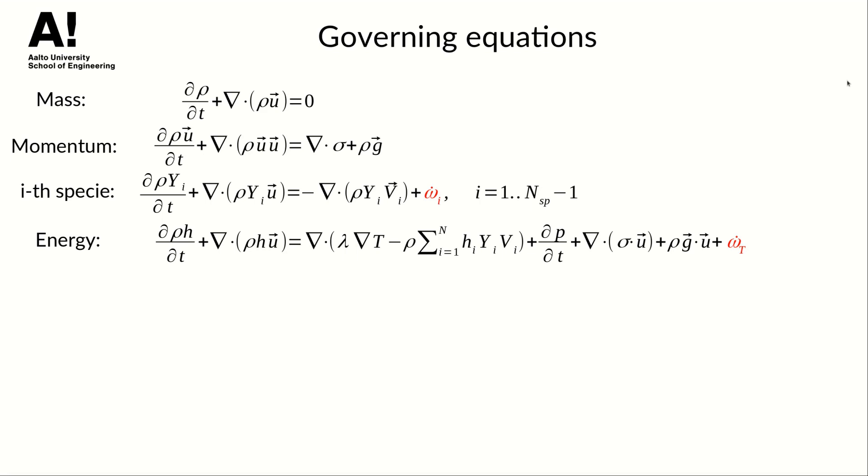This is a well-known set of equations typically solved in reacting flow simulations. Omega dot terms highlighted with red color are species mass and energy source terms arising from chemical reactions.